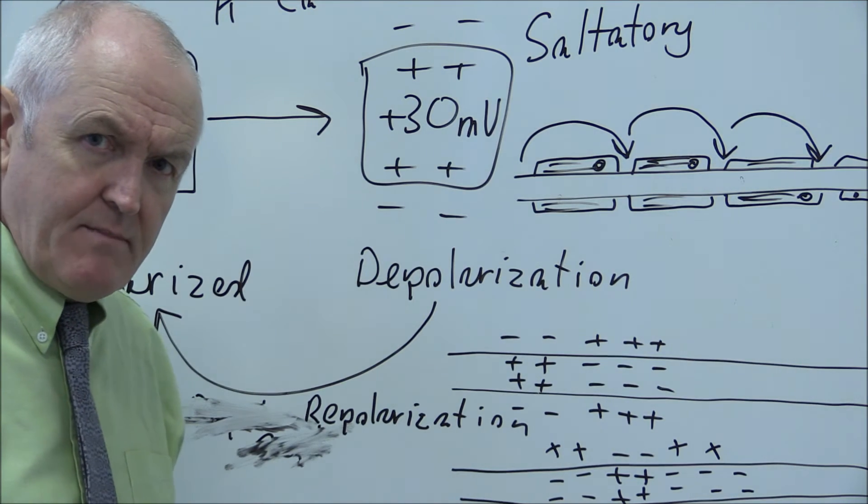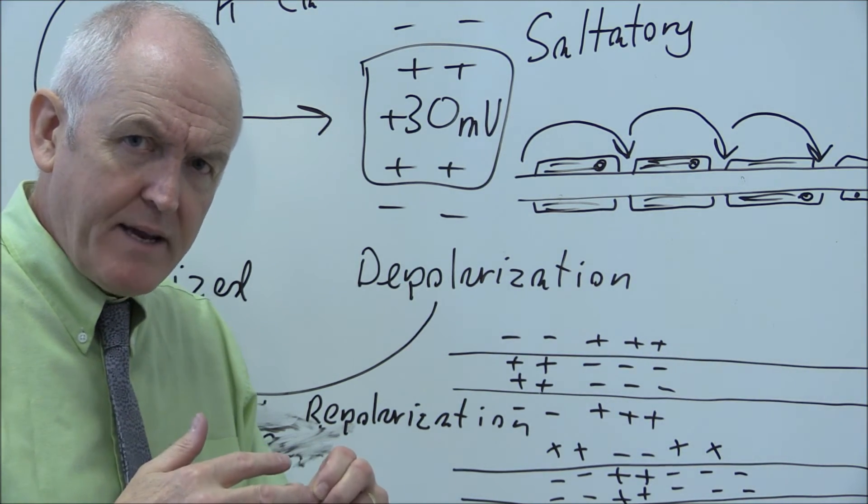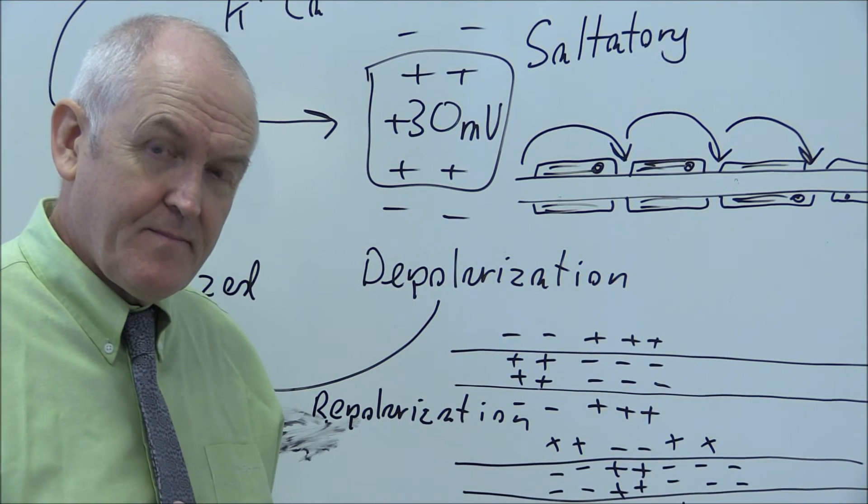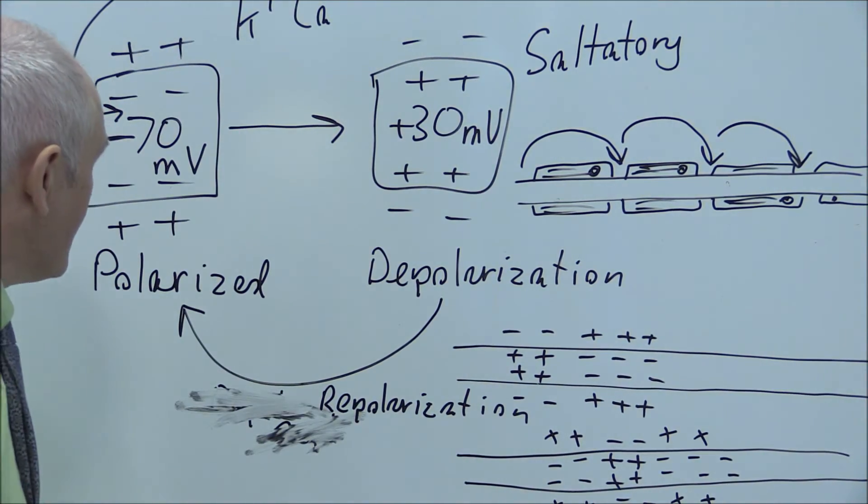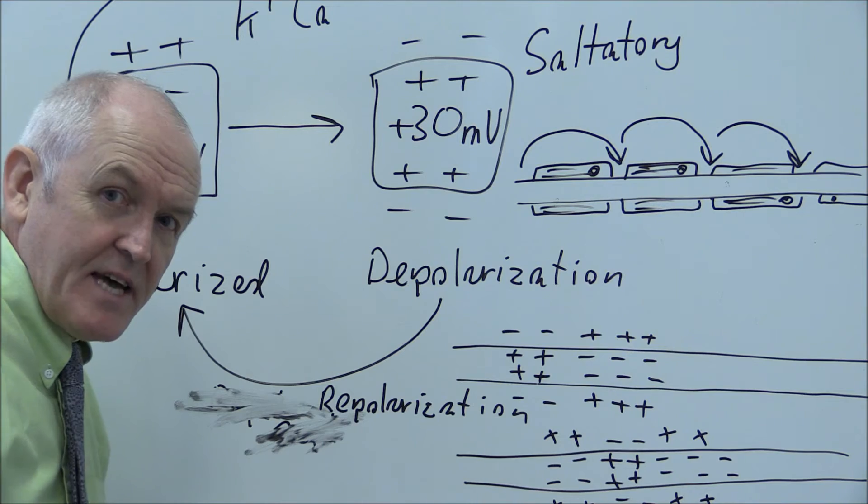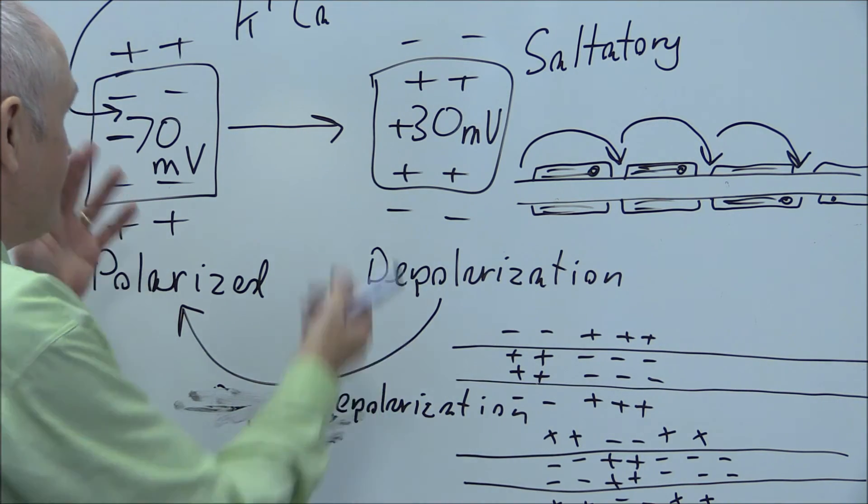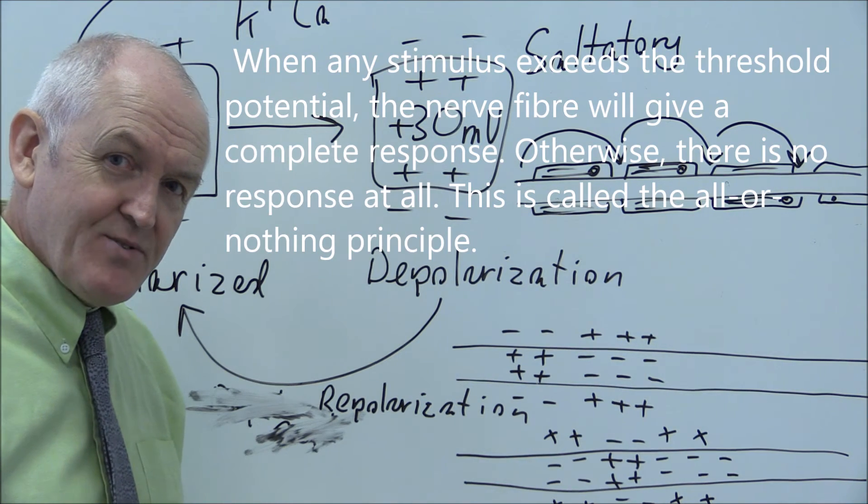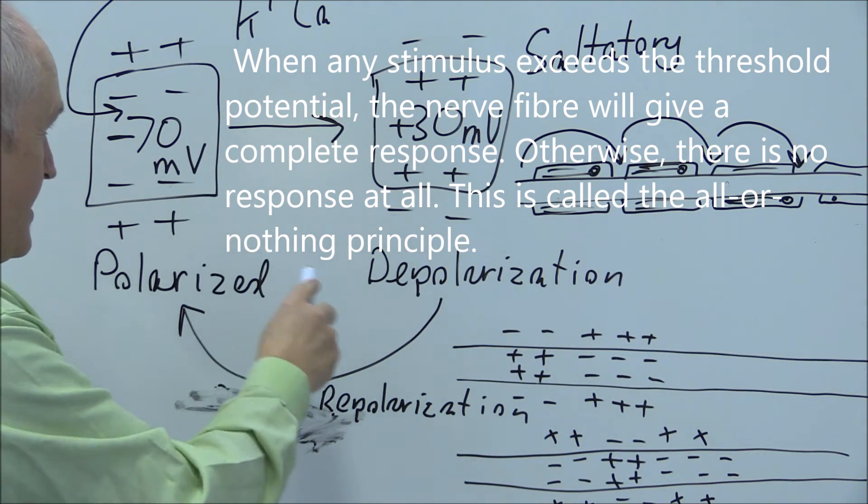if you hurt your thumb a little bit, you'll get a small pain. But if you hurt your thumb a lot, you'll get a bigger pain. What's happening here? Well, the electrical activity is the same. A more severe pain does not cause a larger action potential. The action potential is the same. It's still minus 70 to plus 30.